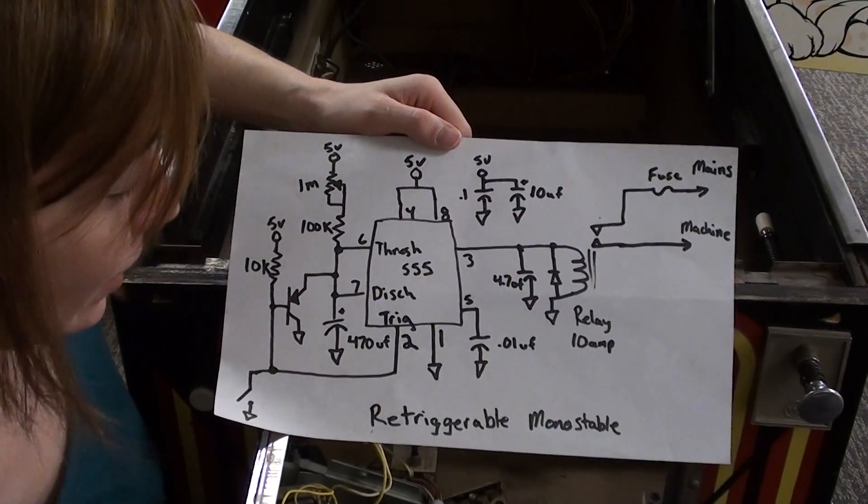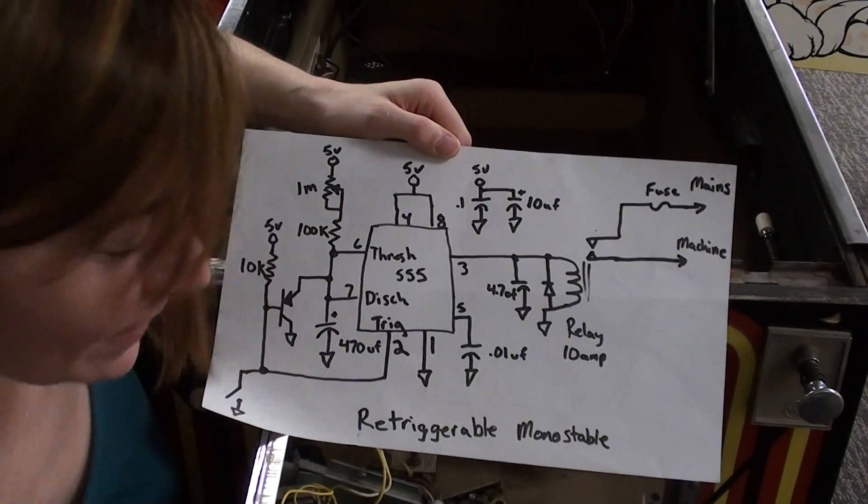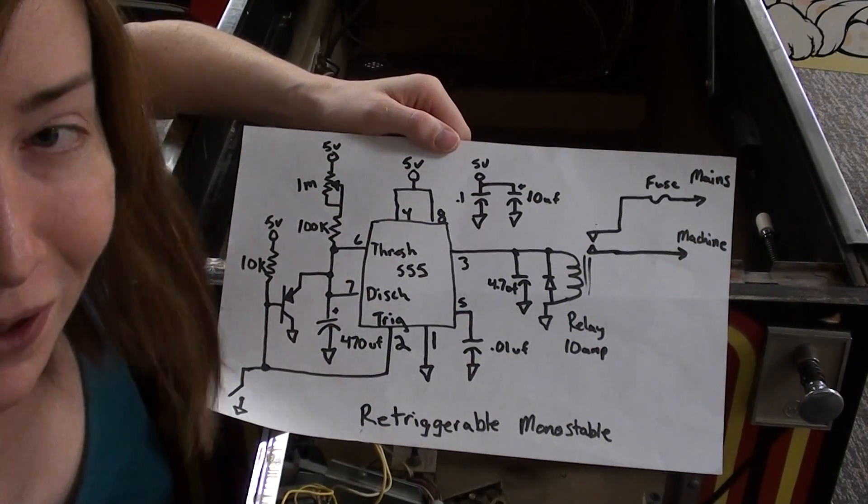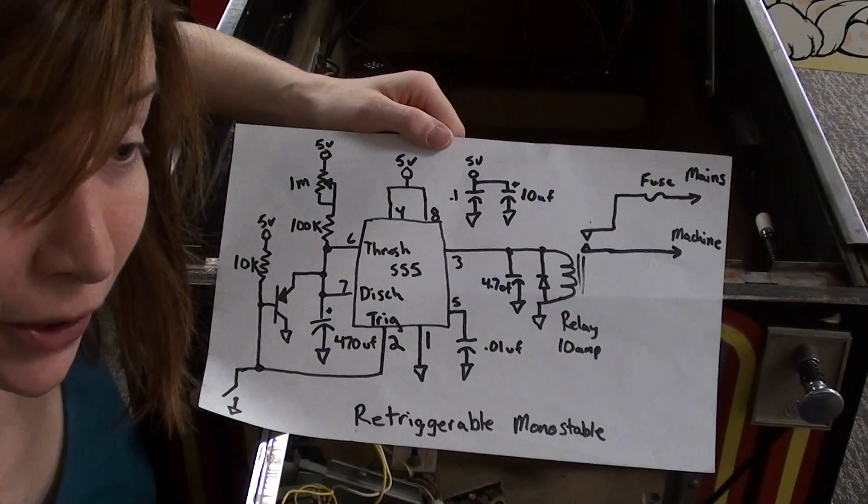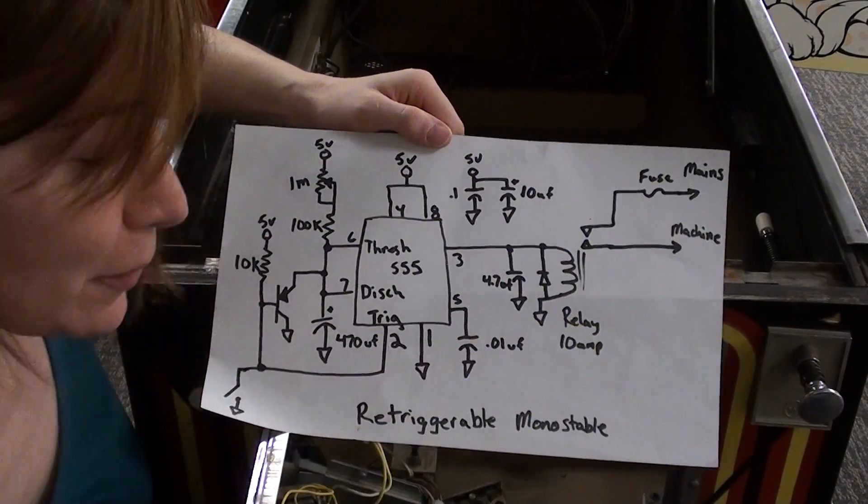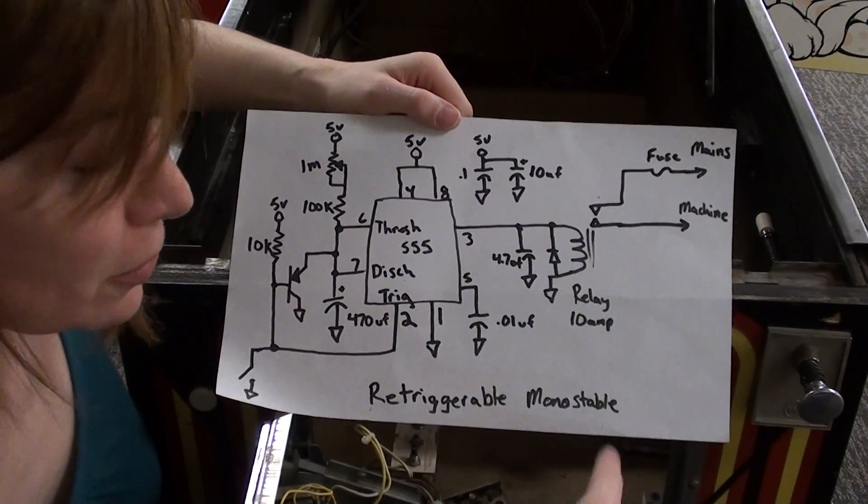So I decided to build a circuit with my favorite little chip, the 555 timer, to automatically turn the machines off if they've been left on, or turn them on just simply by touching the flipper buttons. It's a retriggerable monostable.